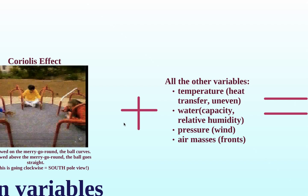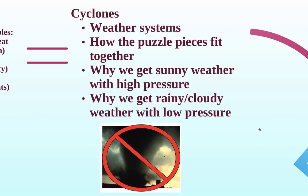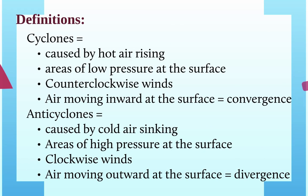So when we take this Coriolis effect and add in all these pieces, what we end up with is a system of weather called a cyclone. A cyclone is not a tornado — these are large-scale weather systems. A cyclone is caused by hot air rising. It represents an area of low pressure at the surface. They have counterclockwise winds, and air is moving inward at the surface — we call that convergence.